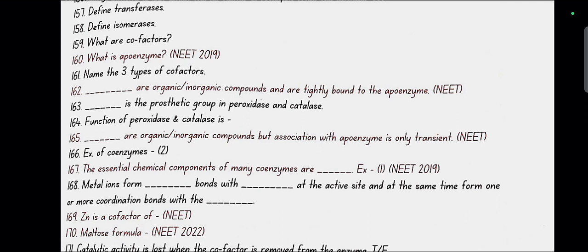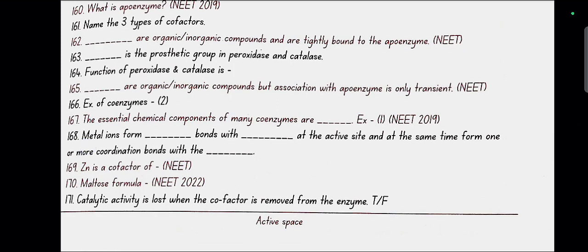Coenzymes are organic compounds but association with apoenzyme is only transient. Example of coenzymes: NAD and NADP. The essential chemical components of many coenzymes are vitamins, example niacin. Metal ions form coordinate bonds with the side chains at the active site and at the same time form one or more coordinate bonds with the substrate. Zinc is a cofactor of carboxypeptidase.